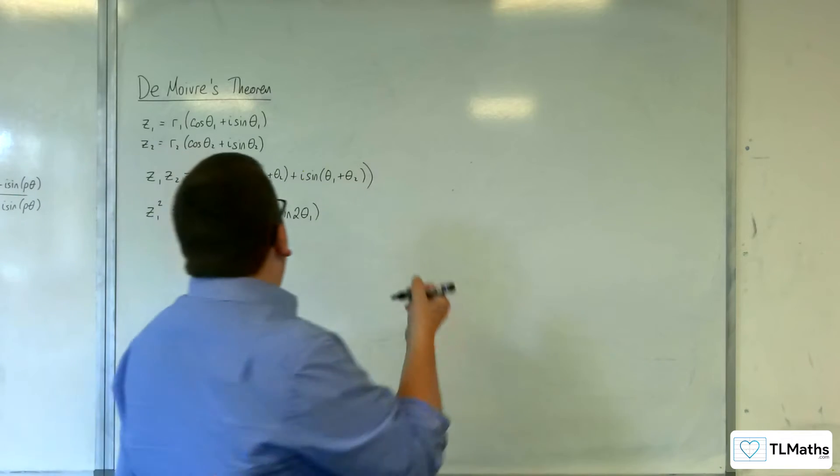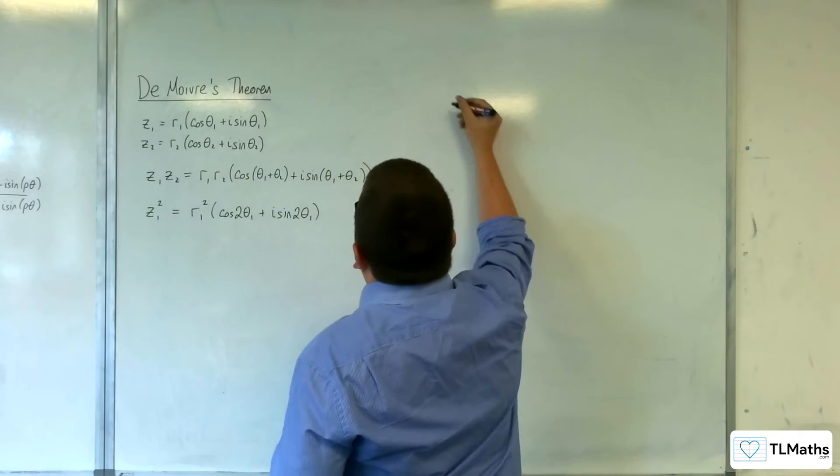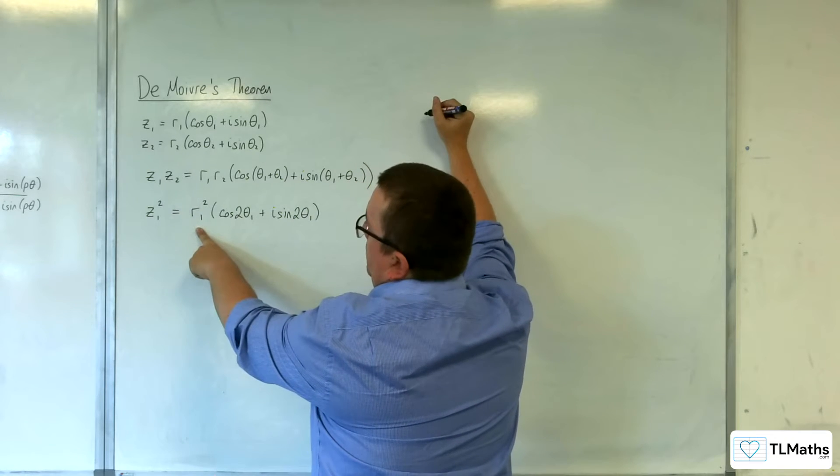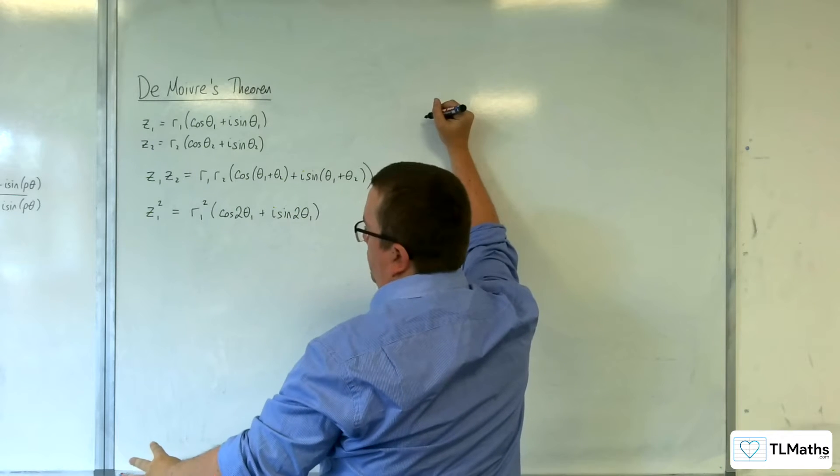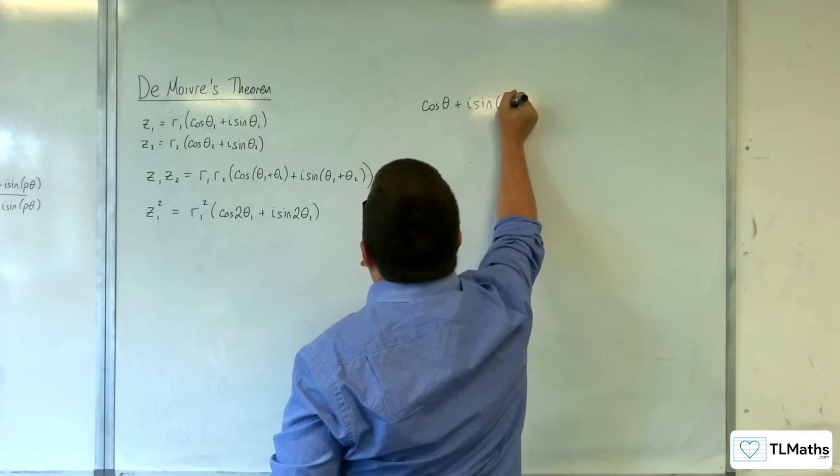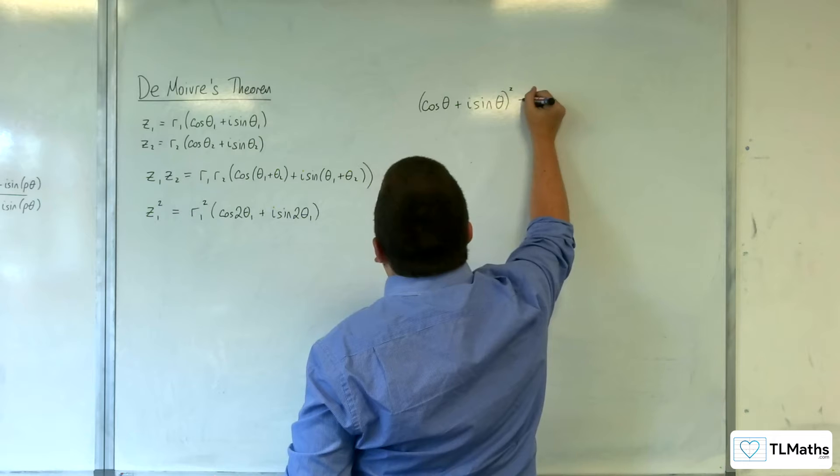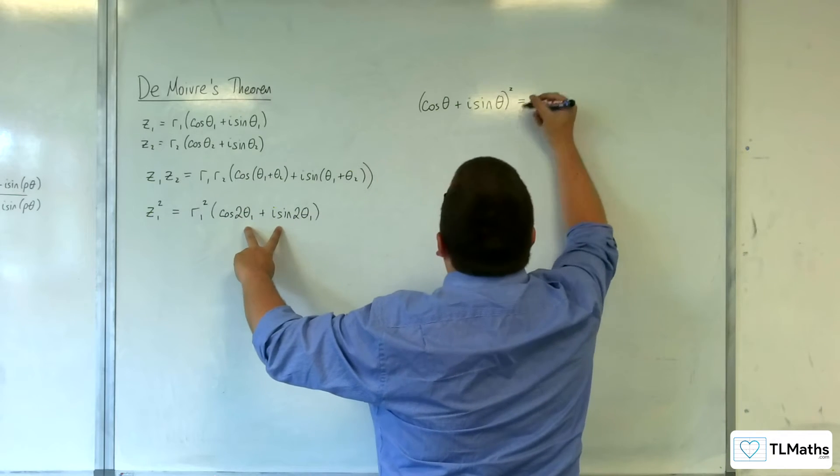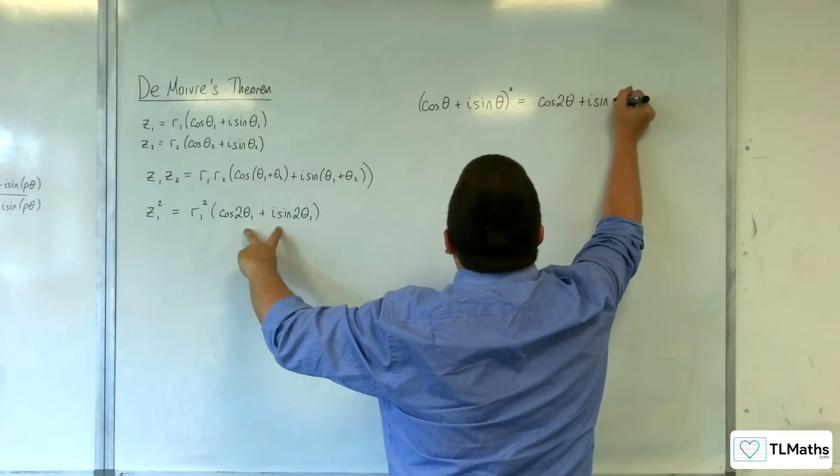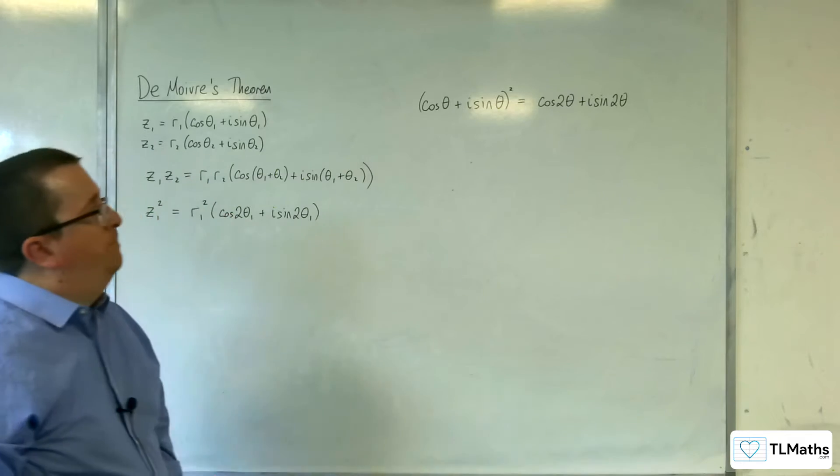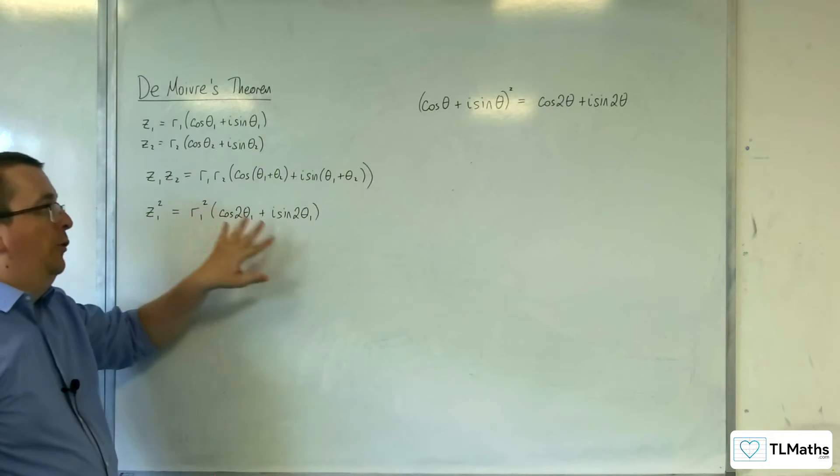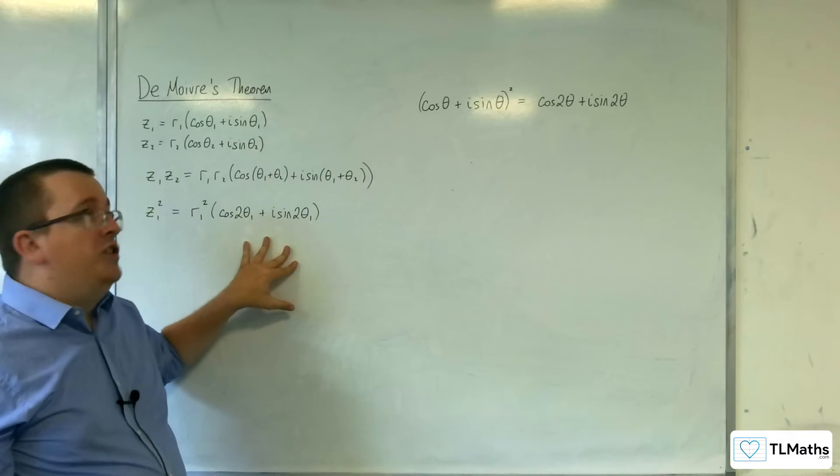So what this is showing is that if you've got—now, I'll ignore the r for the time being, so let's just imagine that r is 1—if you've got cosine of theta plus i sine theta, and you square it, then what you get is this: you get cosine of 2 theta plus i sine 2 theta. So that is a direct result from what we've seen by multiplying complex numbers together when they're in modulus argument form.